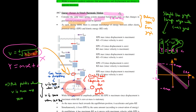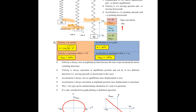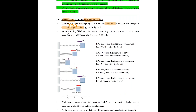Now we move on to energy changes in simple harmonic motion. We consider the mass-on-spring system mounted horizontally so that gravitational potential energy can be ignored — when oscillating horizontally, the mass doesn't move up and down. The only energy changes to consider are between the elastic potential energy of the spring and the kinetic energy of the mass.